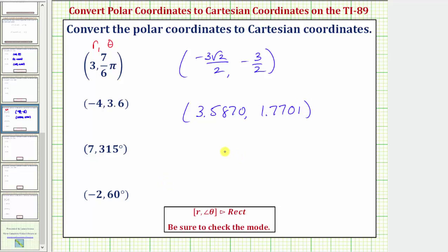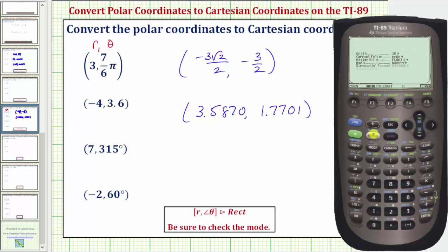Now for these next two points, we'll need to change the mode to degree mode. So we'll press mode, go down to angle, press the right arrow. Degree is number two, so two, enter.